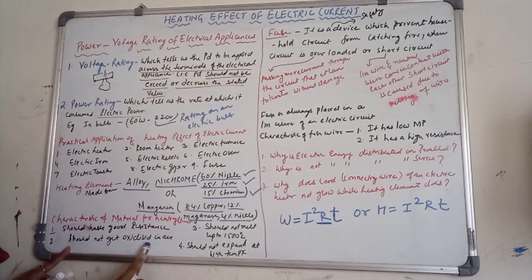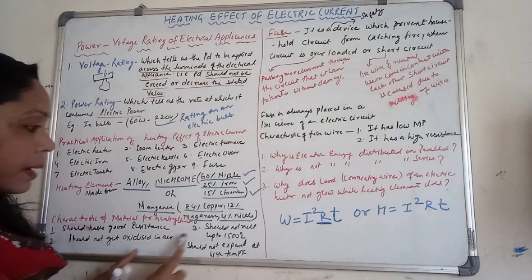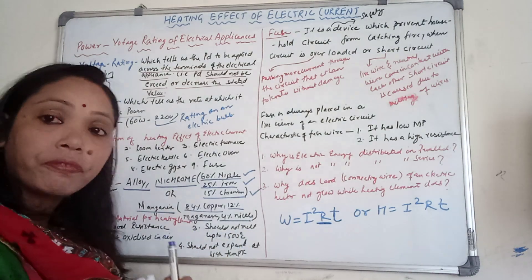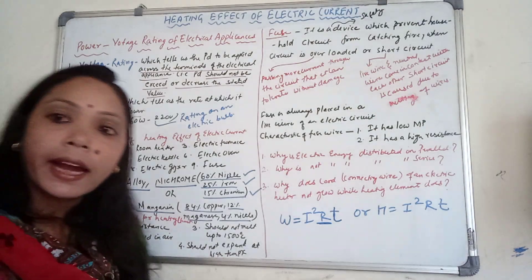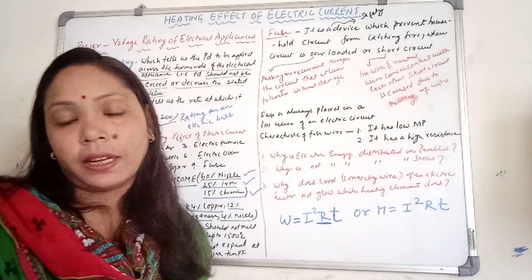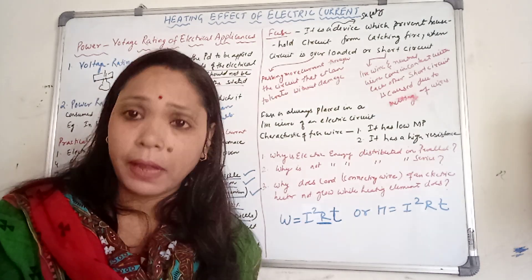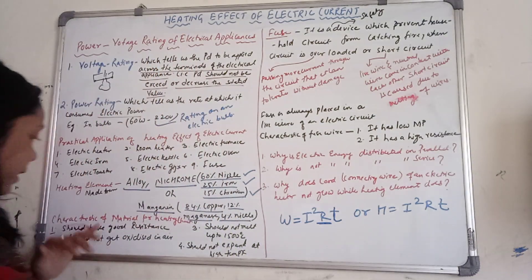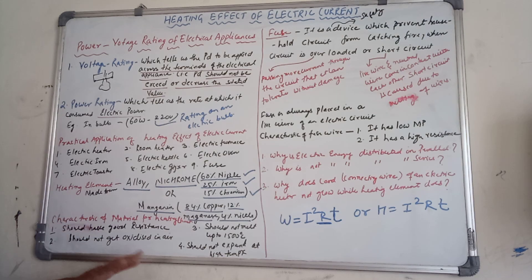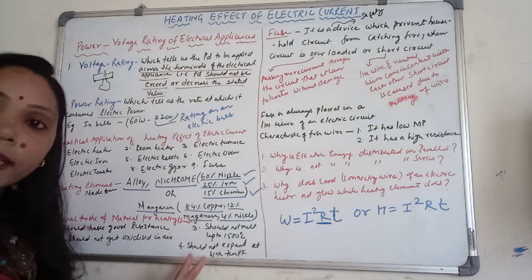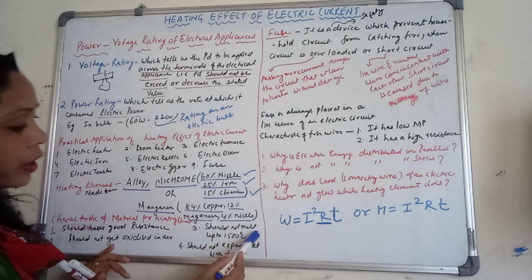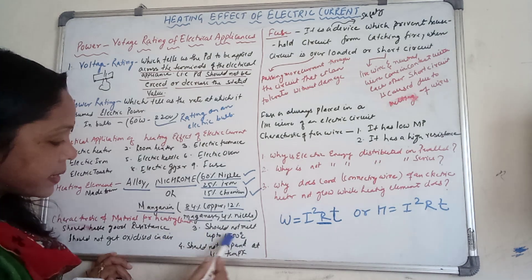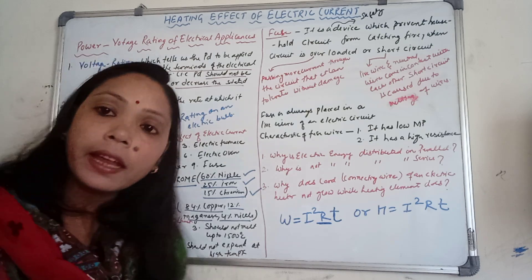Second, it should not get oxidized in air. Third, it should not melt up to 1500 degree Celsius. Fourth, it should not expand at high temperature — if it starts expanding it means it is starting to melt. These are the basic characteristics of material for a heating element.